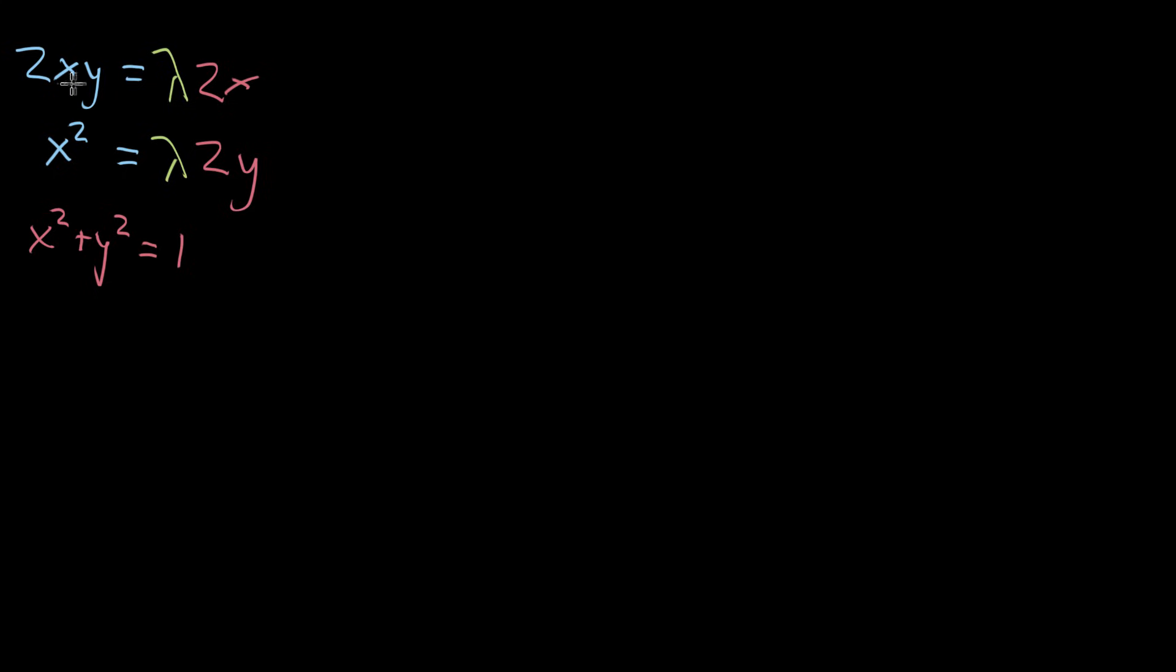We notice there's an x term in each one, so we'll go ahead and cancel those out, which is basically a way of saying we're assuming that x is not zero, and we can return to that to see if x equals zero could be a solution. We're assuming x is not equal to zero in order to cancel out, and we can revisit whether that could give us another possible solution later. But that will be two times y equals lambda times two. And from here, the twos can cancel out, no worries about two equaling zero. And we know that y equals lambda. So that's a nice simplified form for this equation.